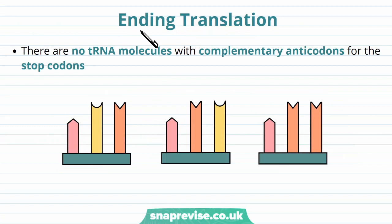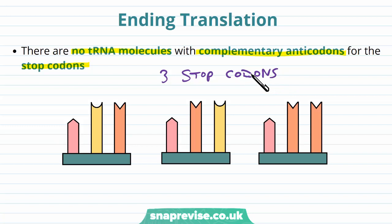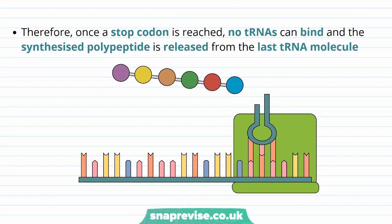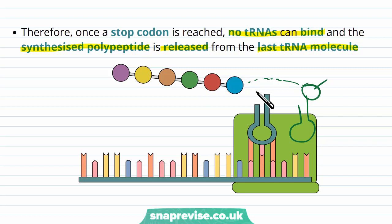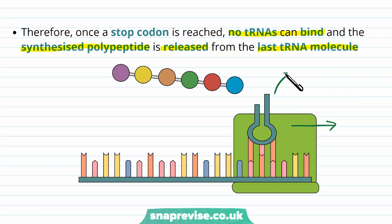When does translation end? There are no tRNA molecules with a complementary anticodon for the stop codons. There are three stop codons: UGA, UAG, and UAA. Stop codons code for the end of the protein to be manufactured. Because there's no tRNA complementary to these stop codons, none of the tRNAs can bind, and therefore no amino acid will be brought. So the synthesized polypeptide is released from the last tRNA molecule. What would normally happen is the next tRNA would come on with its amino acid and a peptide bond would form, but the stop codon has no complementary anticodon so nothing comes in. As the ribosome moves along, the last tRNA is released and the completed polypeptide is finished.